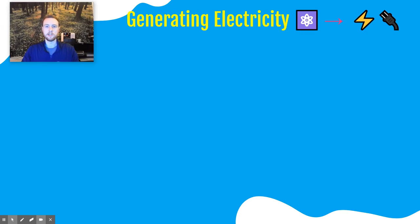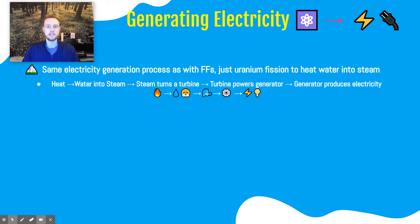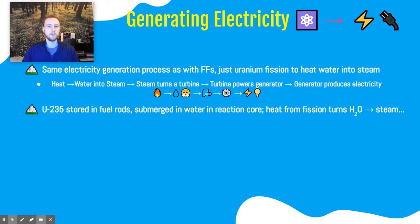Now we'll look at how electricity is generated using nuclear power. The steps are similar to fossil fuel, but we're just using uranium fission to generate heat rather than combusting a fossil fuel. We generate heat by nuclear fission, which turns water into steam. That steam is forced past a turbine, which spins and powers a generator that transforms kinetic energy into electricity. Uranium-235 is the most common isotope used for nuclear power generation. It's stored in fuel rods — we cram rods full of uranium-235 and submerge them in water in a reactor core, where fission occurs.